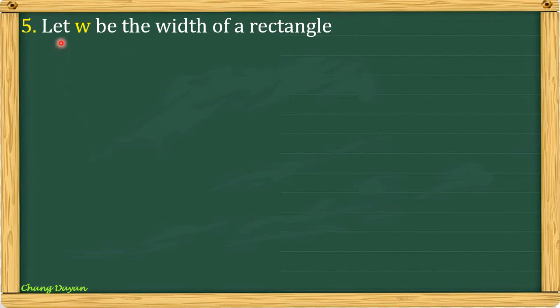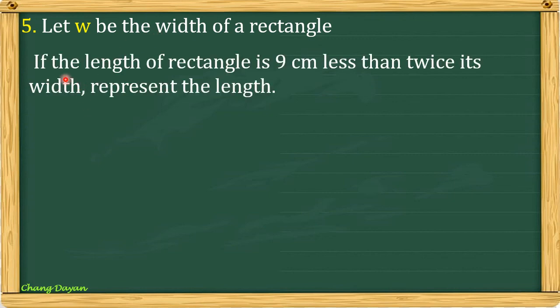For number 5, let W be the width of a rectangle. If the length of a rectangle is 9 cm less than twice its width, represent the length. So here we will be using the backward method. So first, we have here 9 less than twice. So minus 2W, since W represents the width of the rectangle. So we have 2W minus 9.